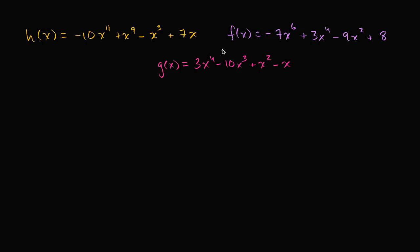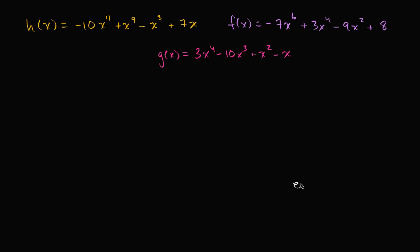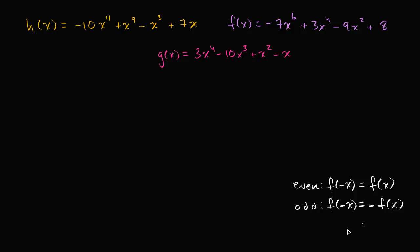We have three functions here. What I want to do together is think about whether each of these functions are even or odd. As a reminder, for an even function, if you input negative x into the function, it's the same thing as inputting x — f of negative x is the same thing as f of x. For an odd function, if you input negative x, that's the same thing as the negative of f of x. If it's neither, then neither one of these will be true.